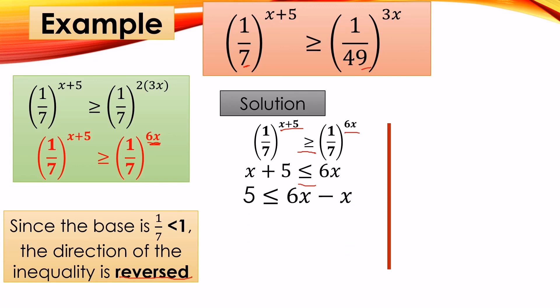Then we move x to the other side: 5 ≤ 6x − x, so 5 ≤ 5x. Dividing both sides by 5: 1 ≤ x, meaning x ≥ 1.